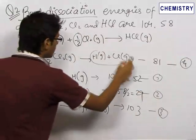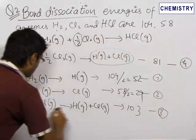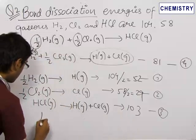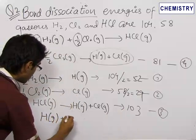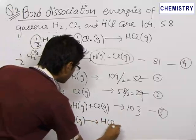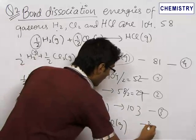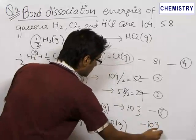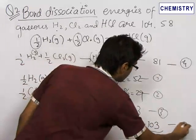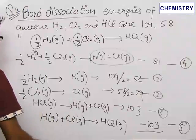We want to eliminate the H(g) + Cl(g) part, so we reverse the third equation to get: H(g) + Cl(g) → HCl(g). The enthalpy is multiplied by −1, so it becomes −103 kcal/mol. This is the fifth equation. Adding equations four and five, the H(g) + Cl(g) terms cancel out.